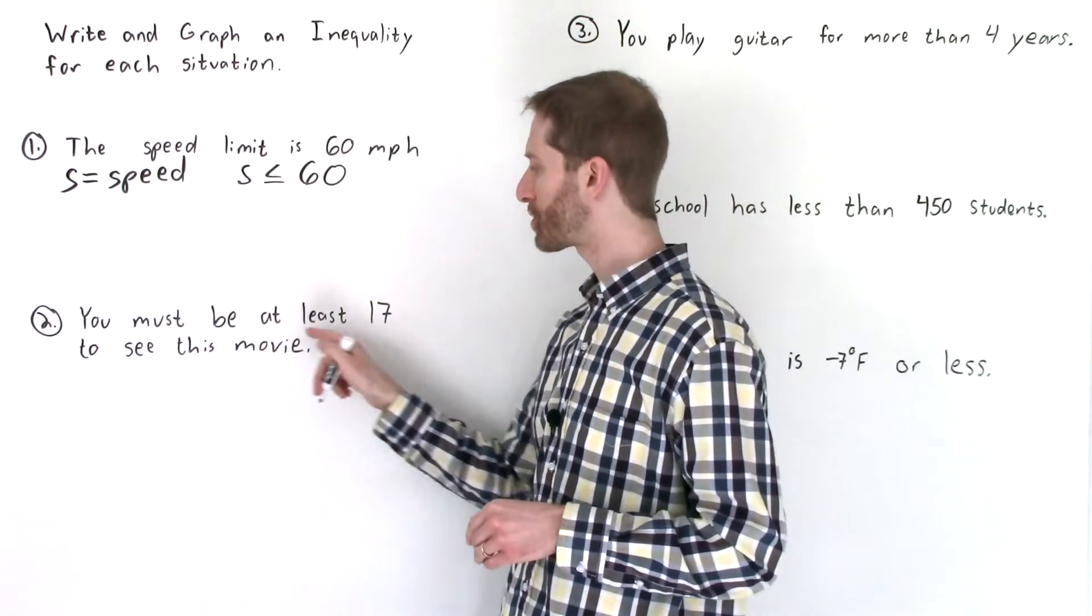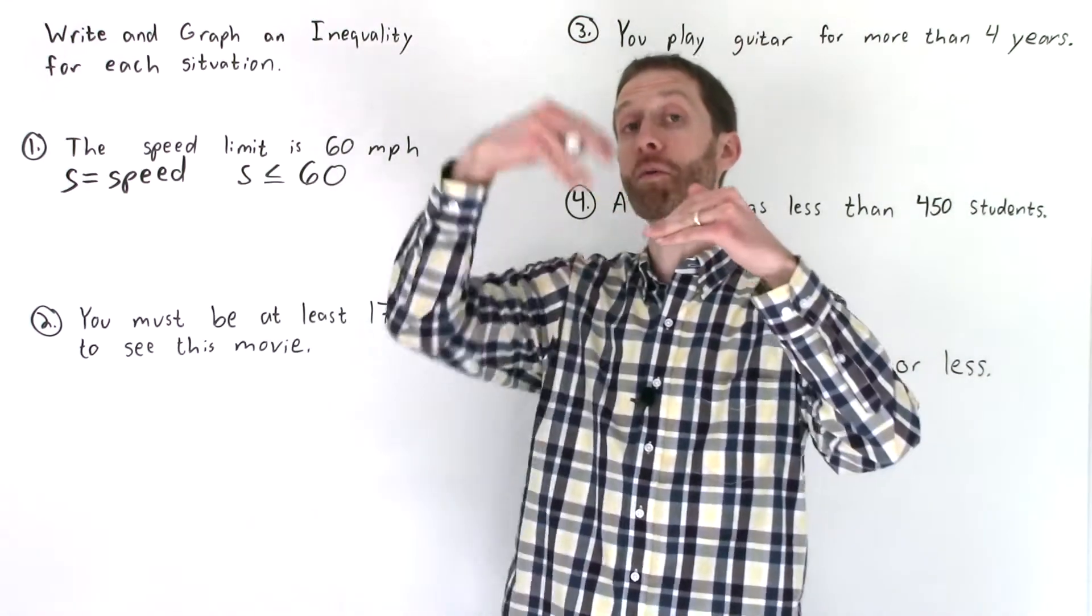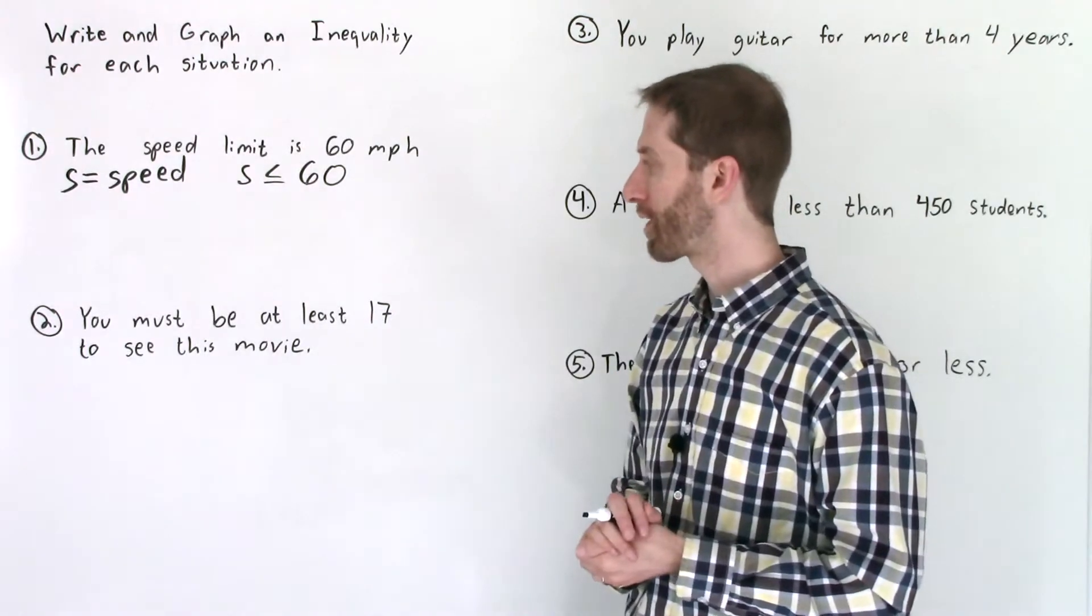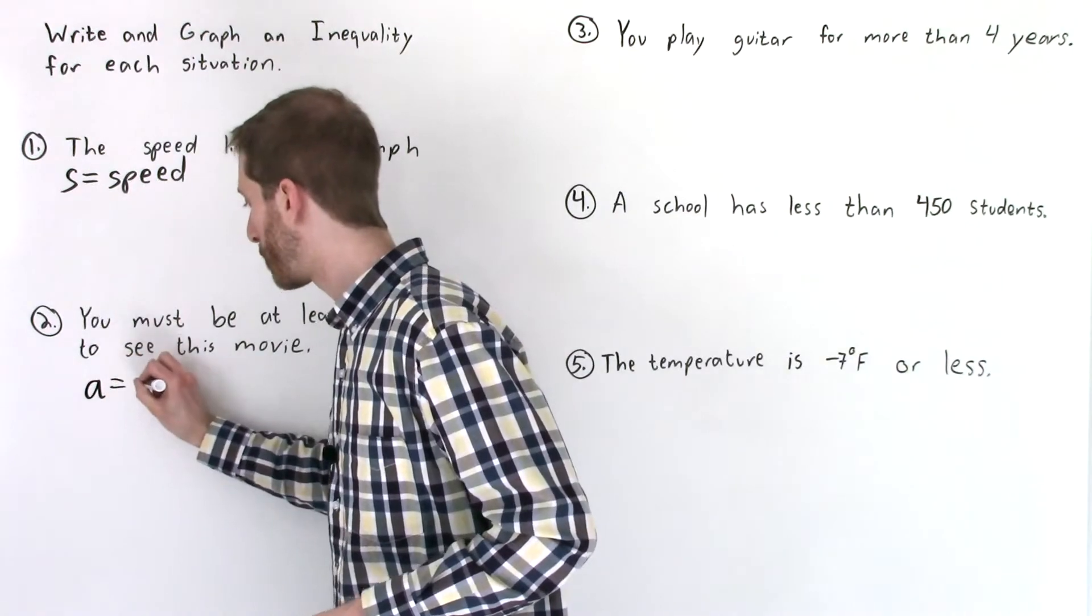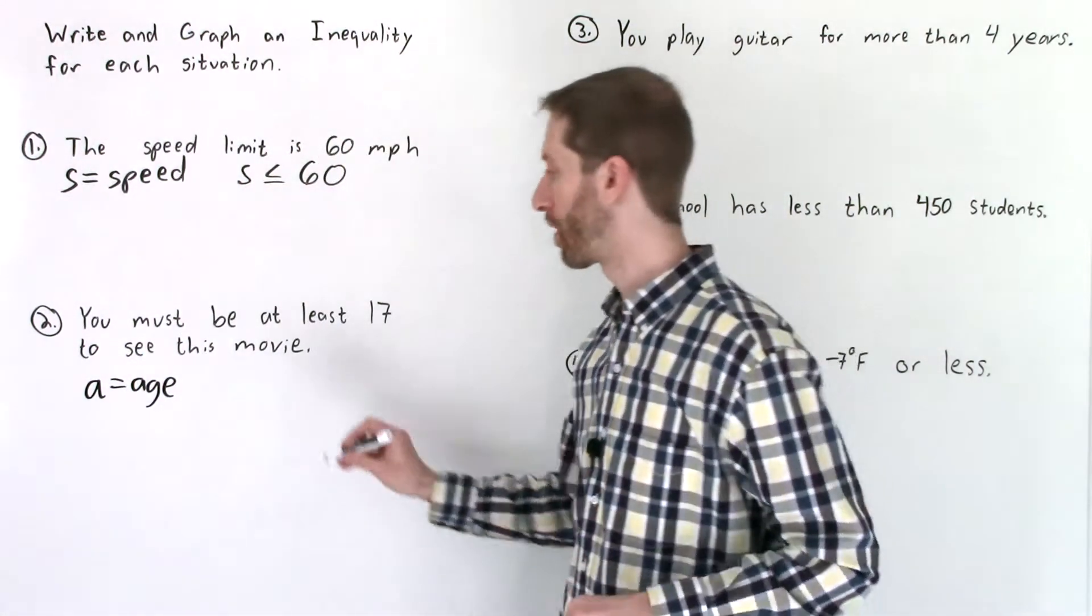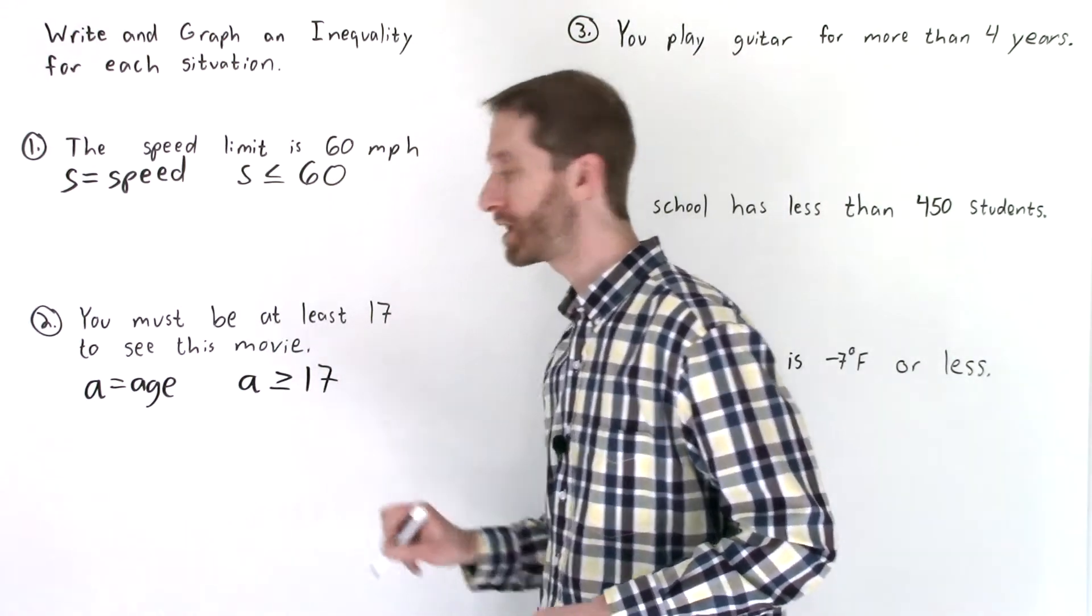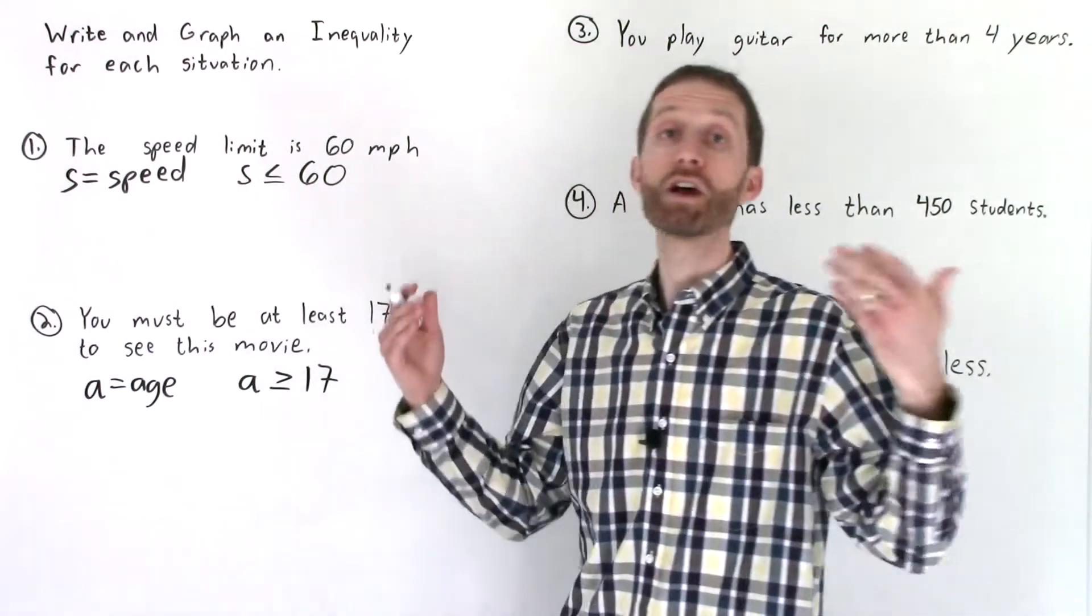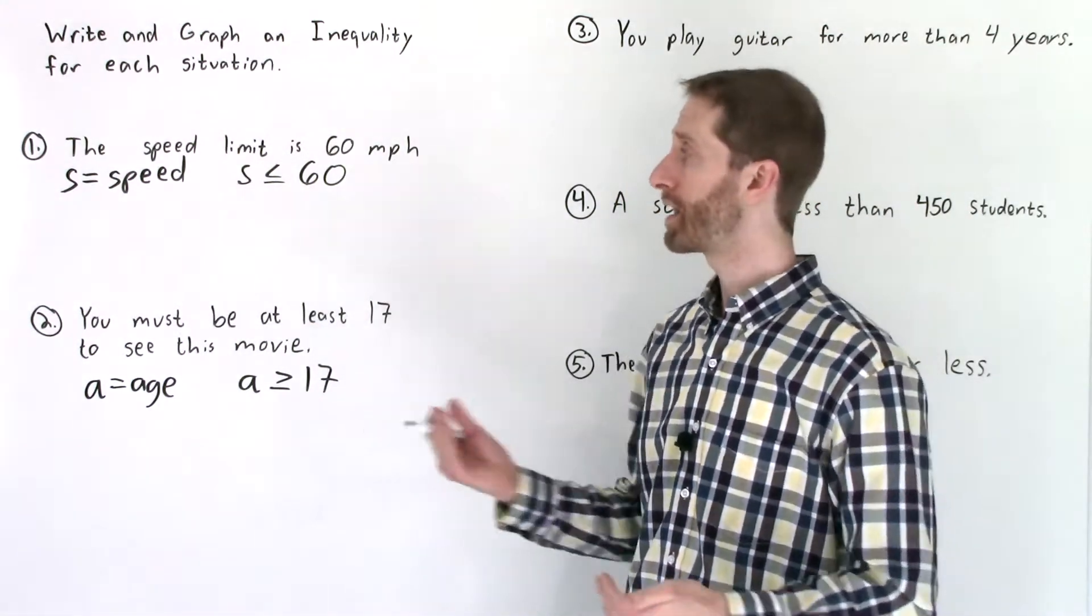Here we have you must be at least 17 to see this movie. So at least means 17 or more, sounds like greater than or equal to. Let's first define this. So it's our age that we're defining. I'm going to let A equal your age and our age must be 17 or more. So age is greater than or equal to 17. Your age could be 17 and a half, 17, 18, 35, or 100. And that would all be solutions to that inequality.